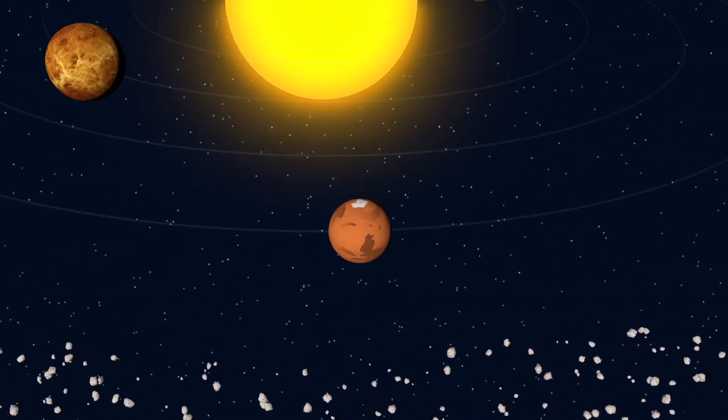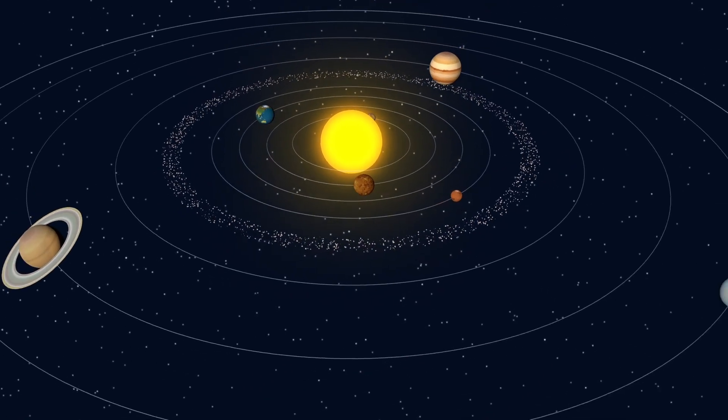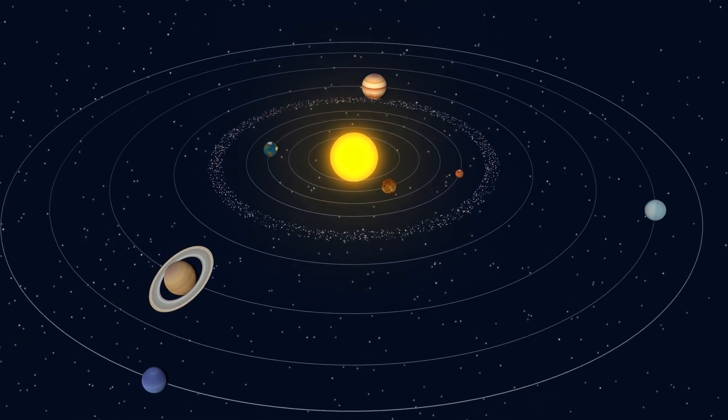Mars is a close neighbor of the Earth, considering how big the solar system is. It orbits the Sun, just like the Earth and the other planets.